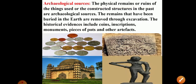The next category is archaeological sources, which are the physical remains or ruins. The things used or constructed in the past are called archaeological sources. Physical remains include ruins of structures that were destroyed during foreign invasions, as well as remains that have been buried under the earth.